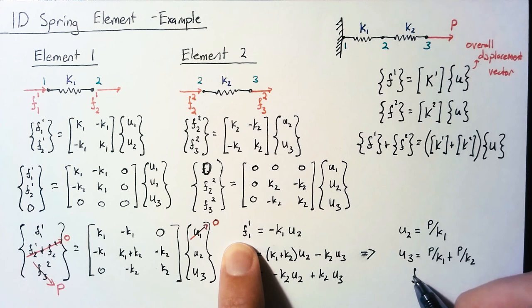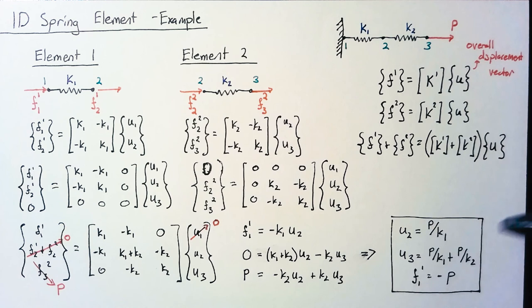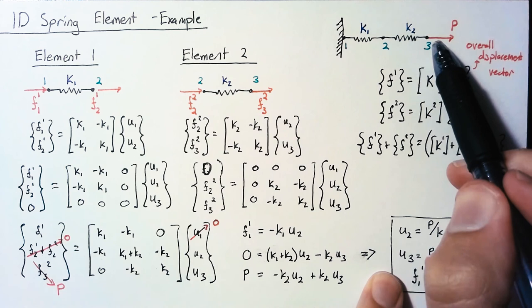So that force is just F11 equals negative P. And this is the solution to our spring system. Now, we can just think about this and verify everything. As for the forces, it makes sense that if we have some force acting to the right on node three, that's going to have to be balanced by a force acting to the left on node one.